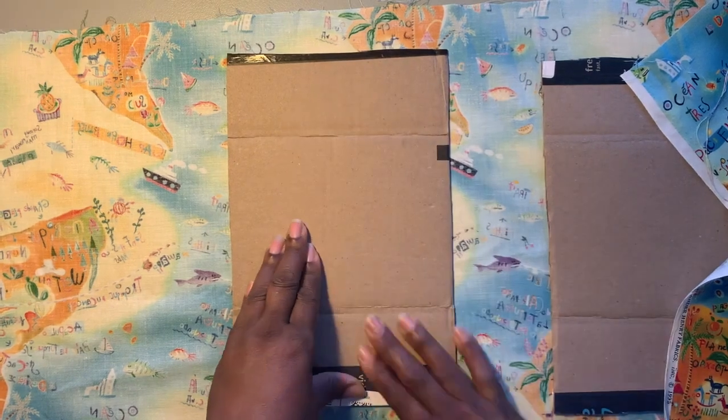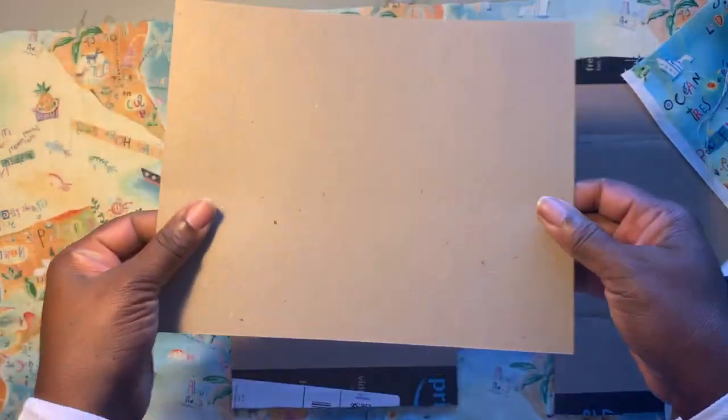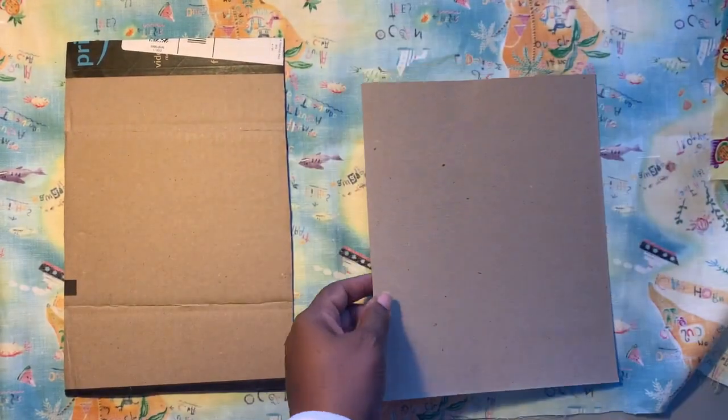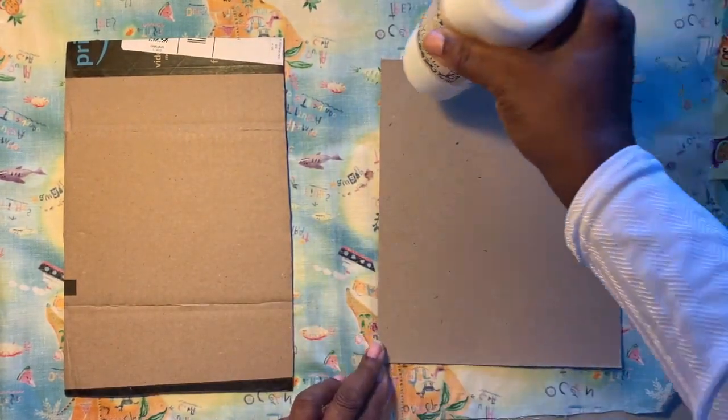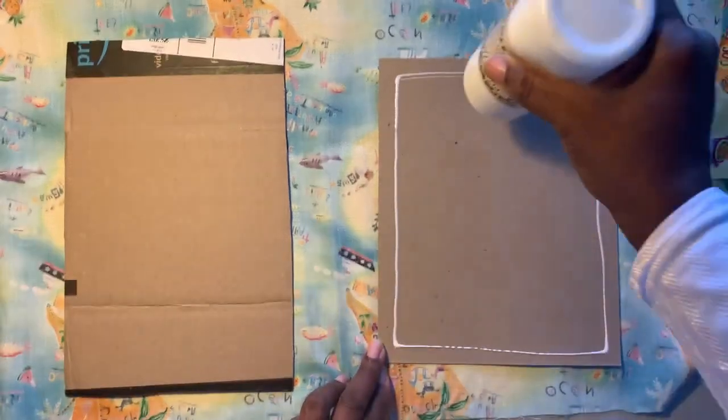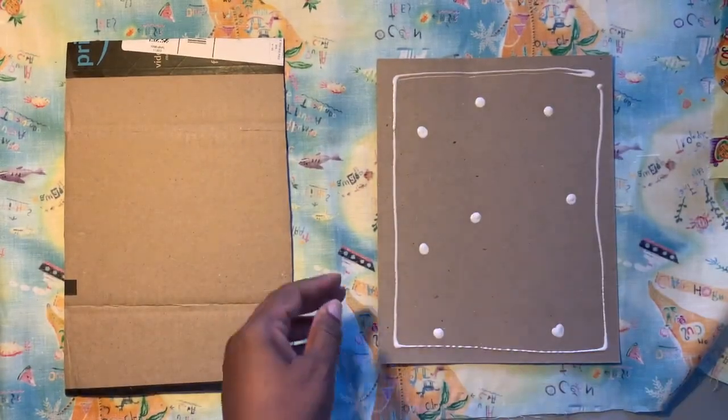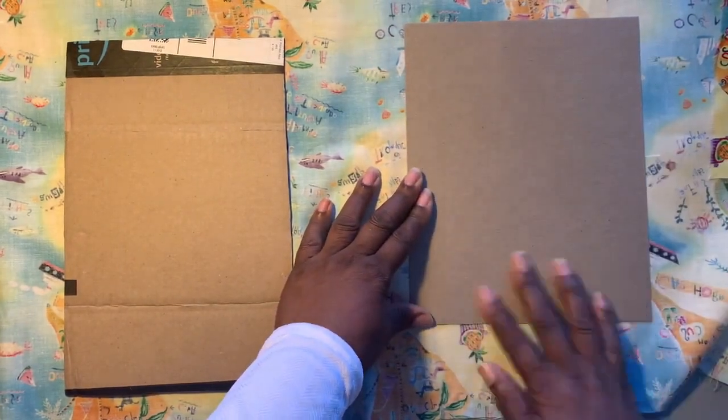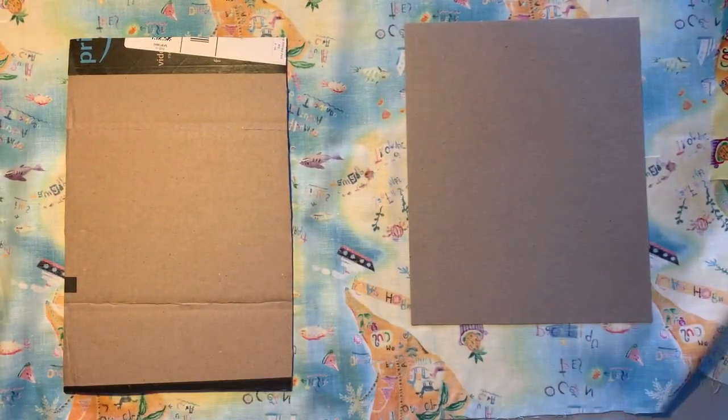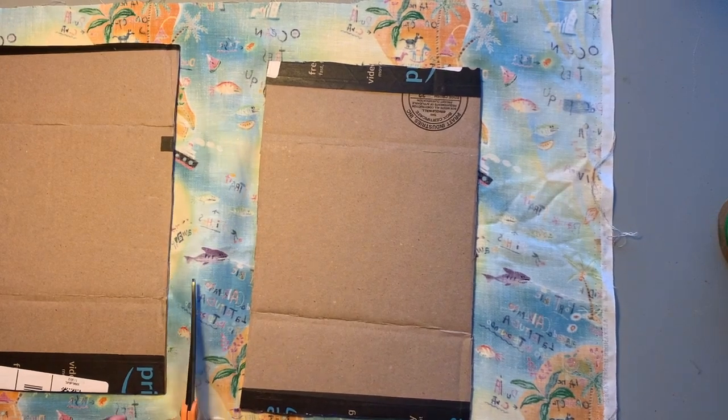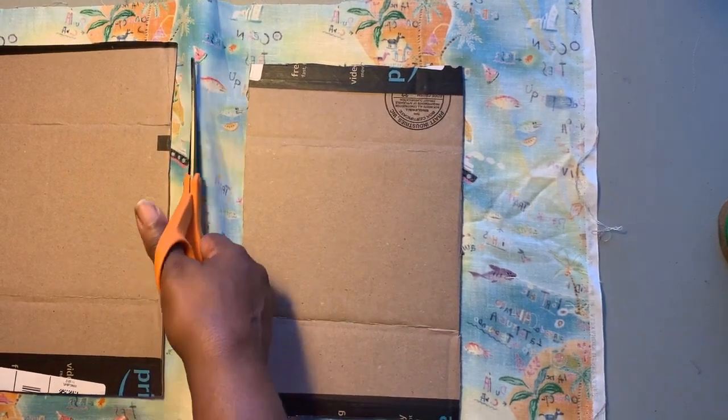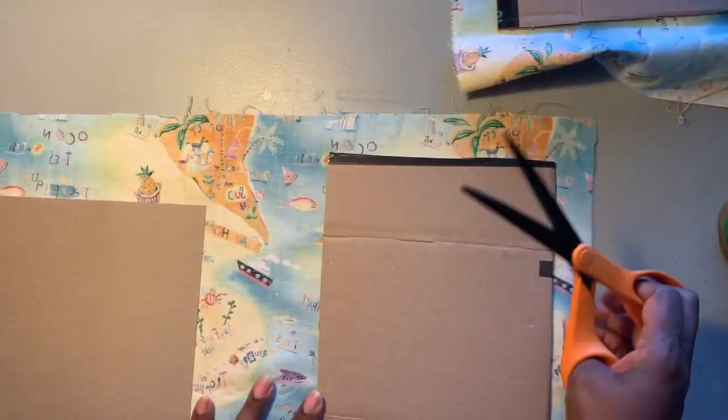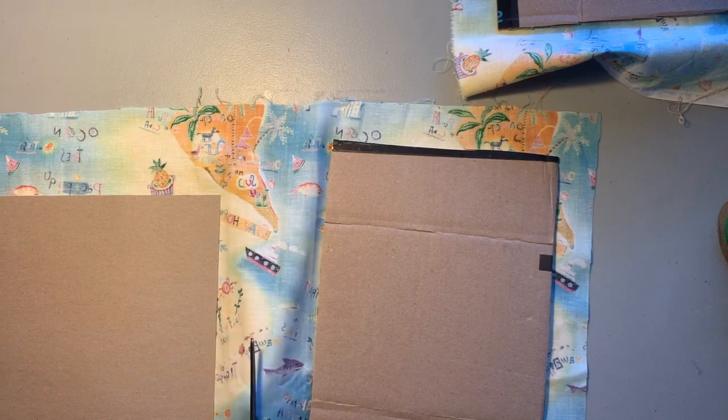Now I'm going to take my card stock, a thick piece of paper, and I'm going to glue it down as well, leaving space between the covers. This card stock here is going to cover my binding on my journal. Now I'm going to trim, making sure I have a little bit of fabric all the way around because I'm going to fold the fabric over so that my journal has a nice finish.